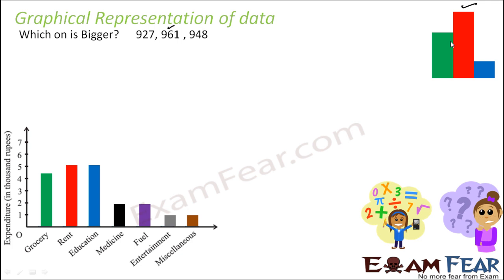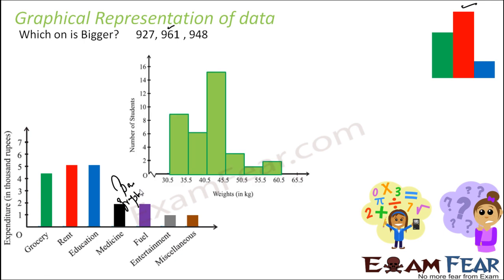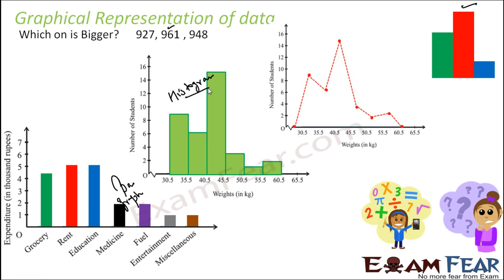In this chapter, we will be studying bar graphs, histograms, and frequency polygons. We will explain what all these are. Over the next few hours, we will study bar graphs, histograms, and frequency polygons — all to represent data in a more graphical form so that even a layman can understand.